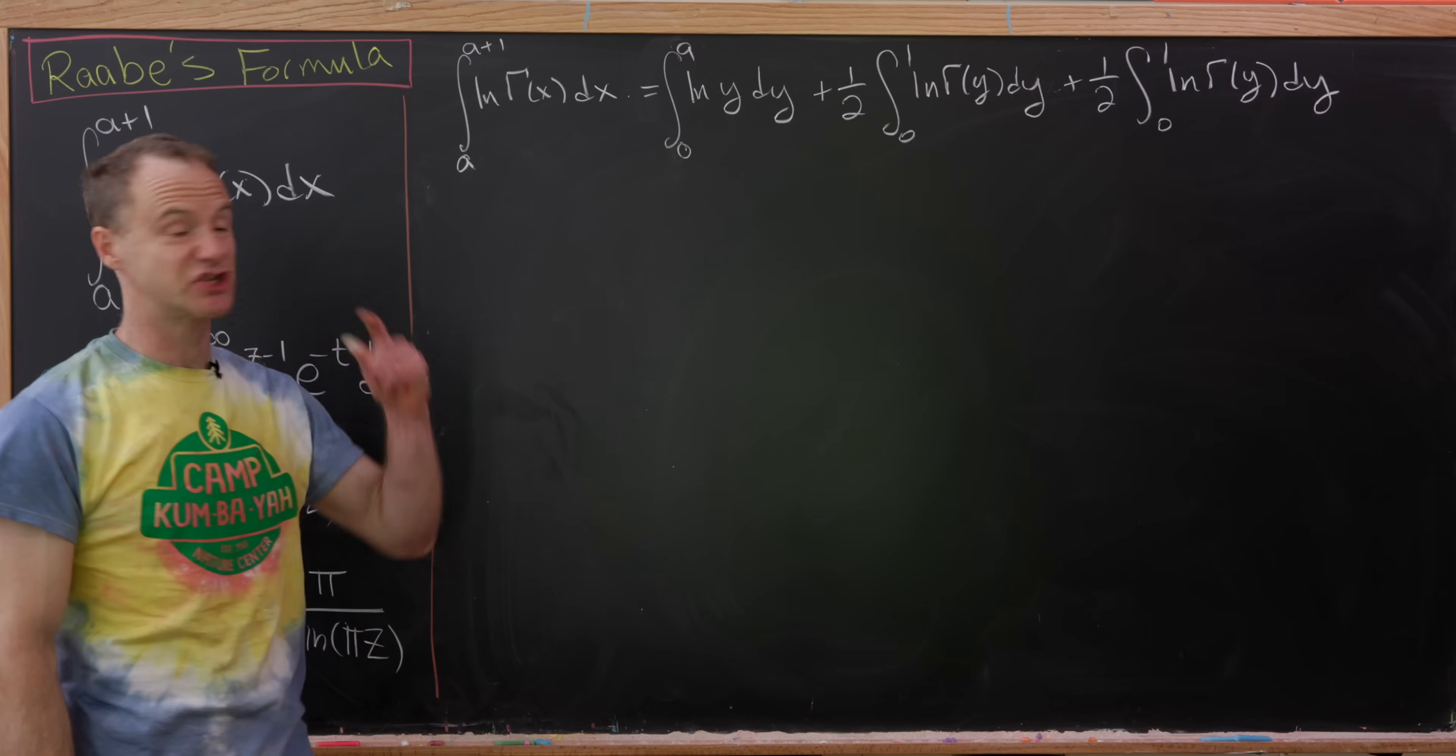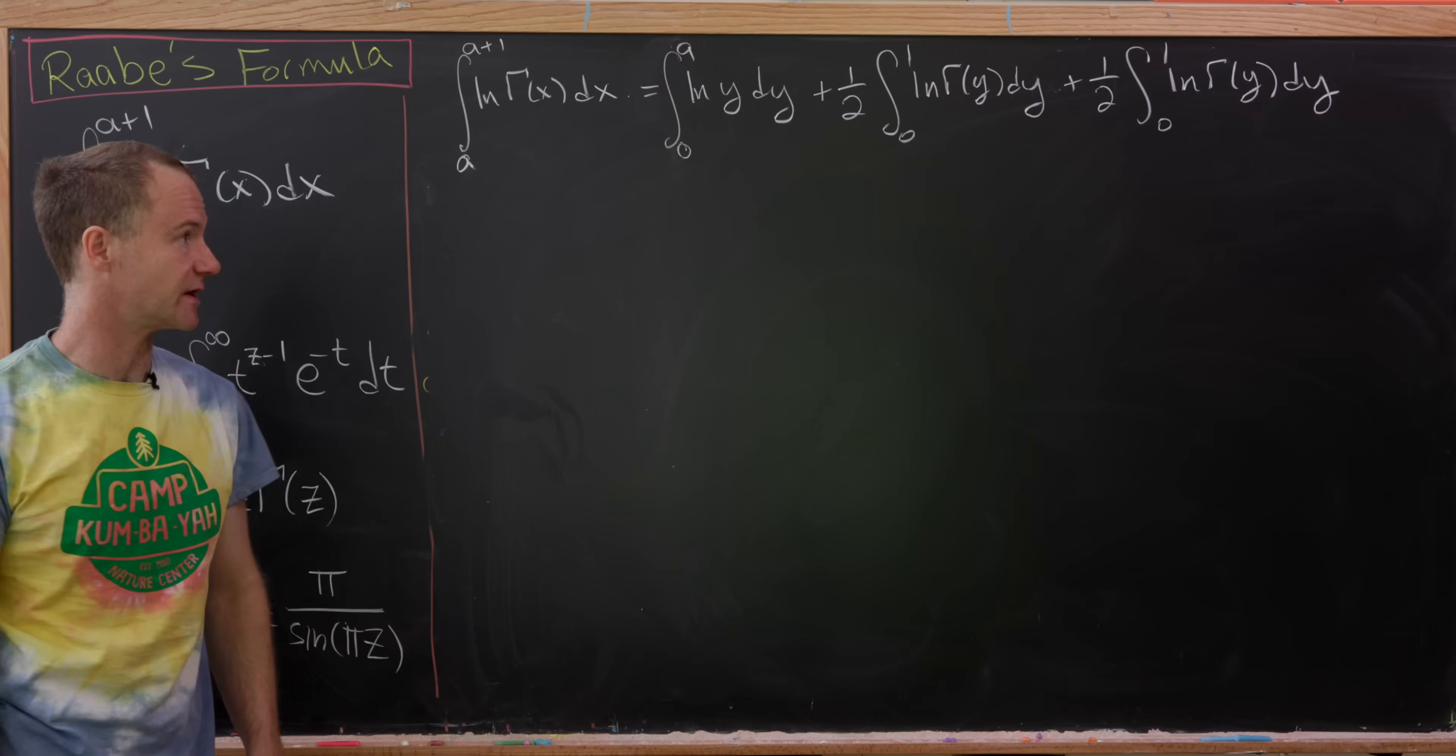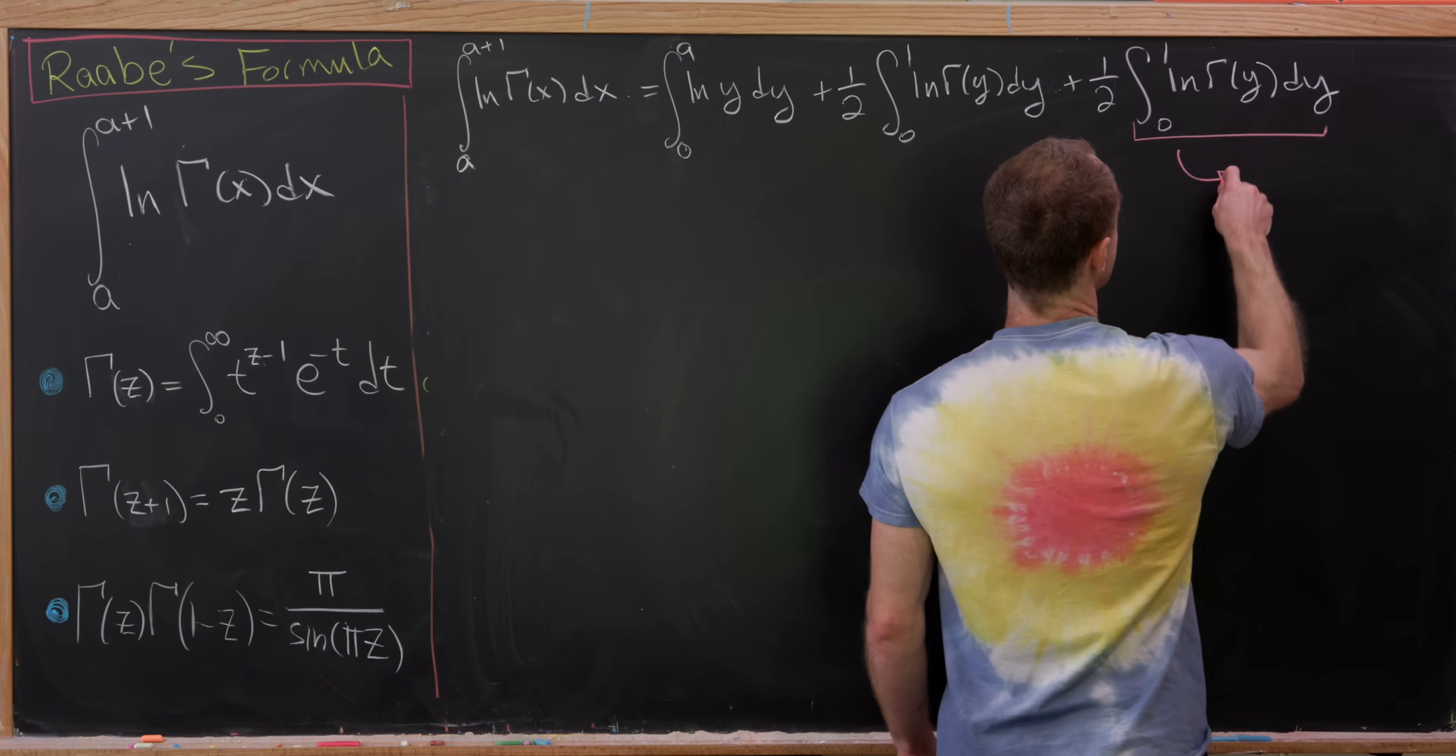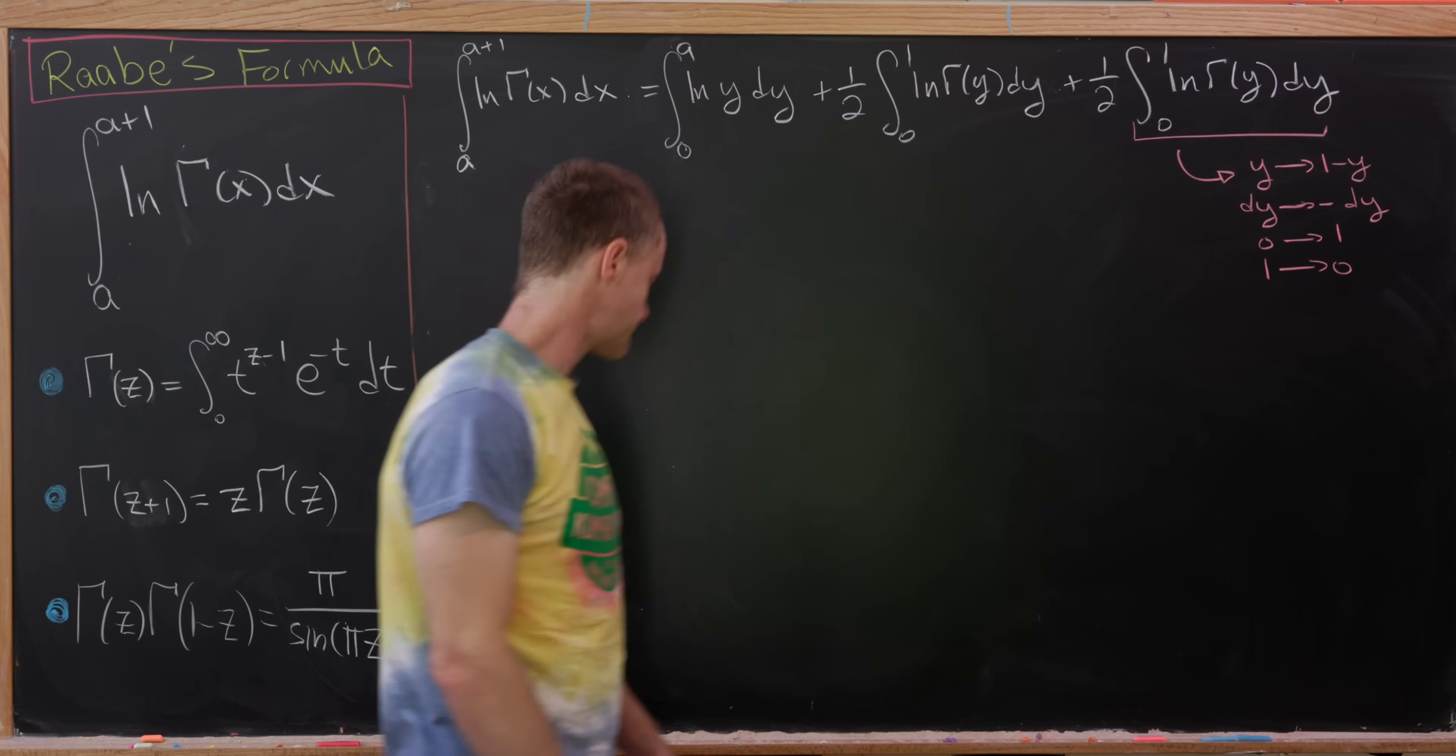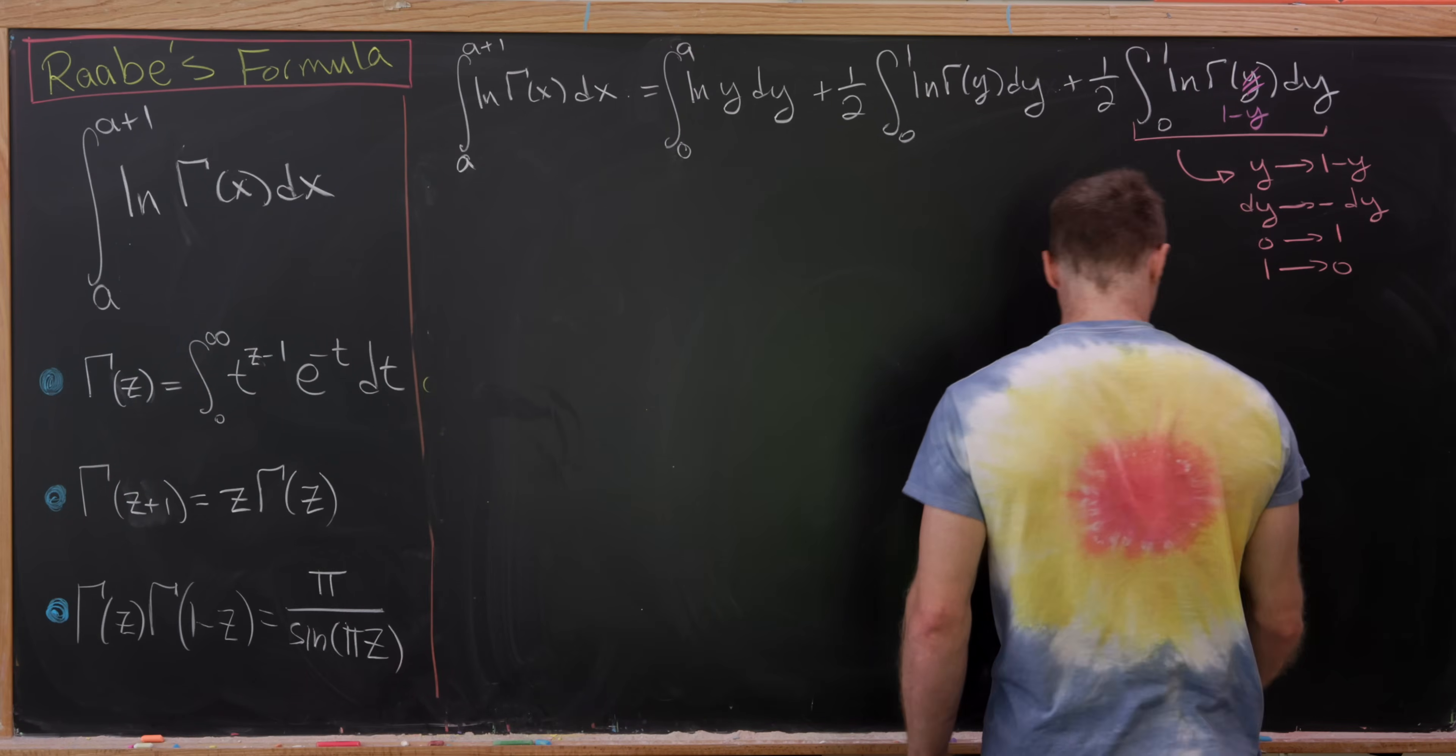So this is where we ended up. I actually did something cheeky and I split this integral from 0 to 1 of log gamma of y into two copies of half of that integral. But that's clearly the same thing. But that sets up our next trick, which will be to do a change of variables over here. So our change of variables will take y and replace it with 1 minus y. But that means that dy will be replaced with minus dy, 0 will be replaced with 1 and 1 will be replaced with 0. That'll change the order of integration, but then also pick up a minus sign. So the minus sign will change the order of integration back, meaning that all that changes is that this becomes a 1 minus y.